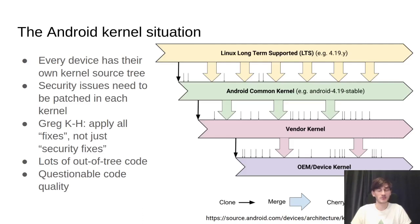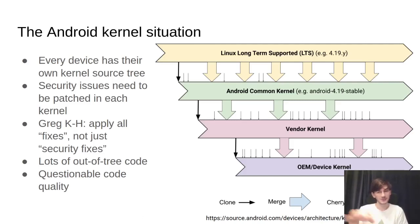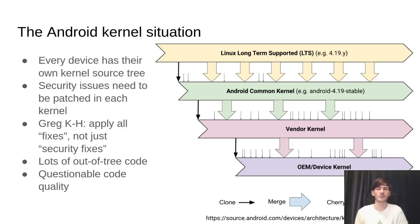A device manufacturer then gets this kernel and modifies it again, adding device-specific drivers on top. Because of this, every device in existence has its own kernel and kernel sources not shared with anything. This also means security issues need to be patched in every single one of those kernels. Greg Kroah-Hartman, the Linux stable maintainer, often says that all fixes should be applied, but manufacturers and SoC vendors only apply fixes that have a CVE number attached - and sometimes it takes a year until the CVE is out, even though the patch was available a year earlier.